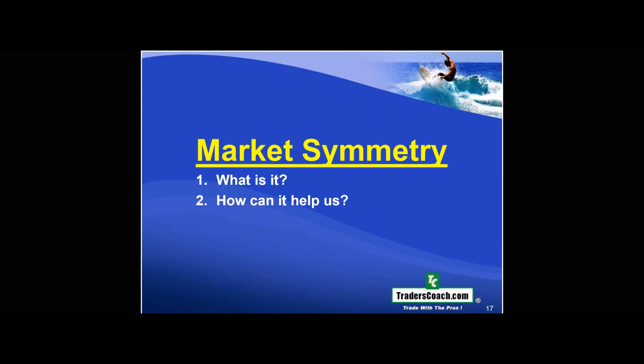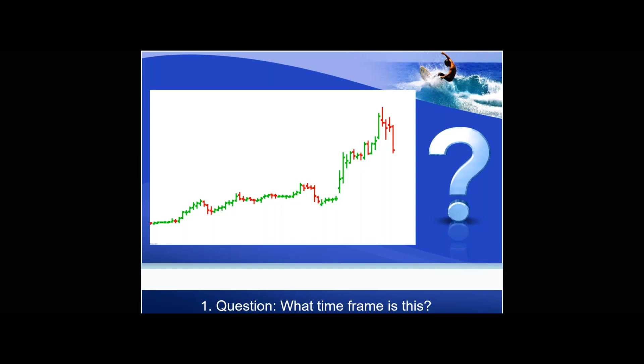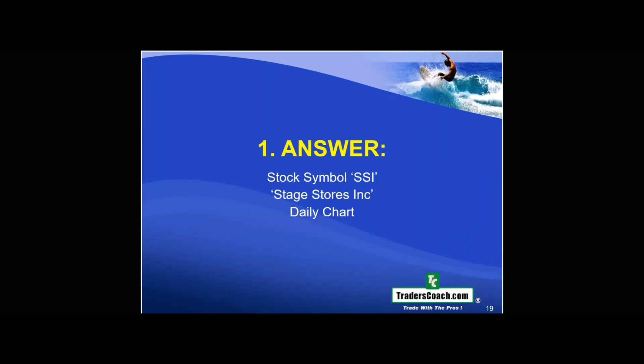Now let's talk about market symmetry — what is it and how can it help us? The best way to explain this is to look at a chart. Without the X and Y axis telling us the price or the date, you have no idea what time frame it is or even what market it is. That particular market pattern has been seen across a variety of different markets. The answer in one example is stock symbol SSI — Stage Stores Inc. — on a daily chart.